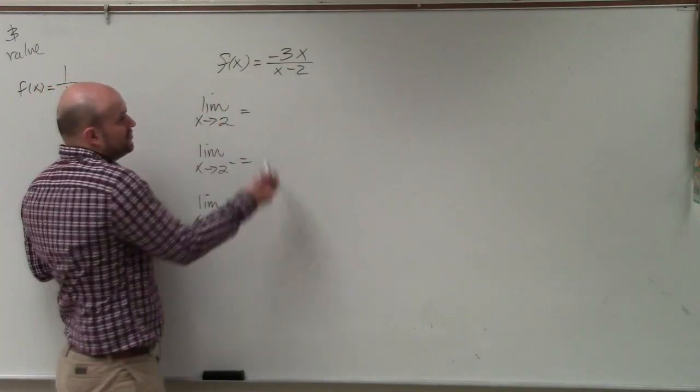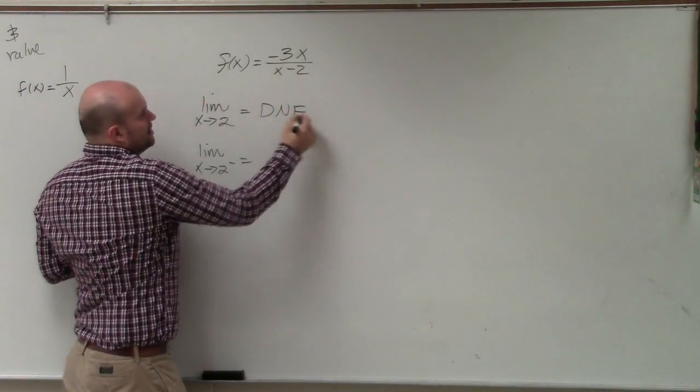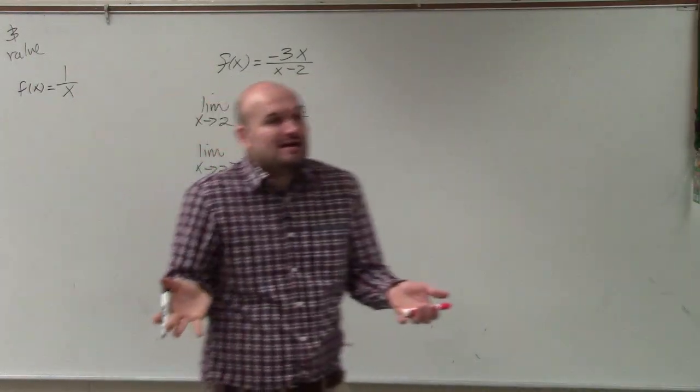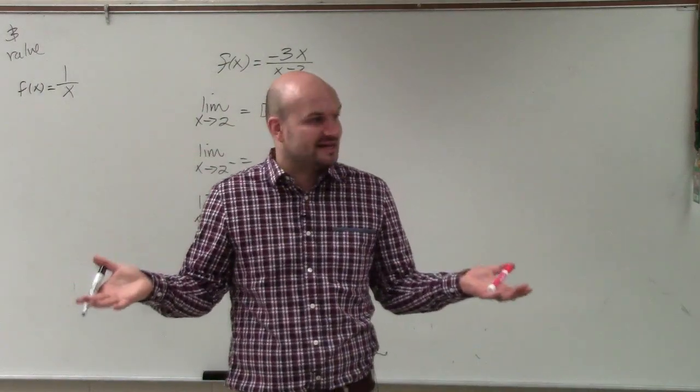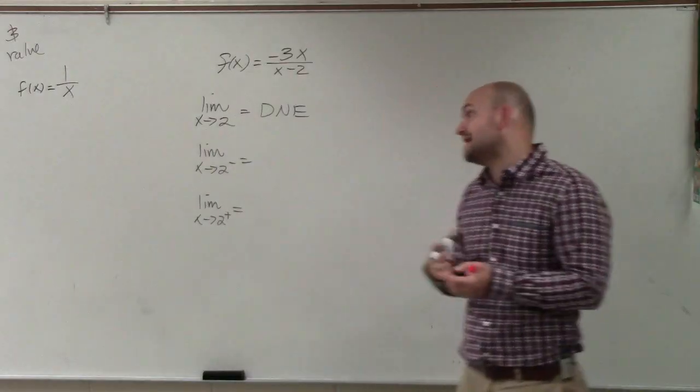So we can just assume that by plugging in at 0 that the limit does not exist. And obviously, if we were able to use a calculator, we could kind of be able to see that the limit does not exist. But let's use our left and right hand limits to show why it does not exist.